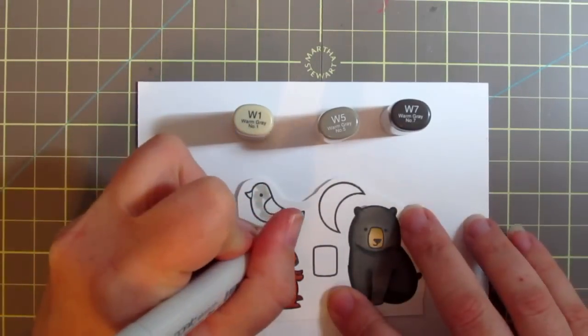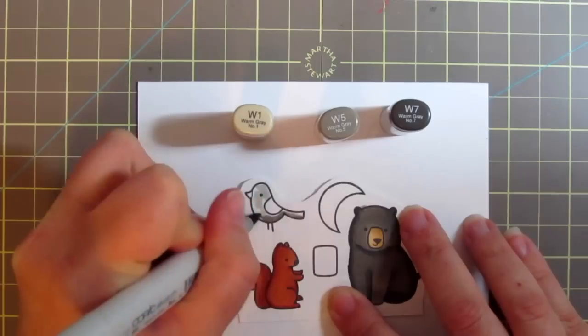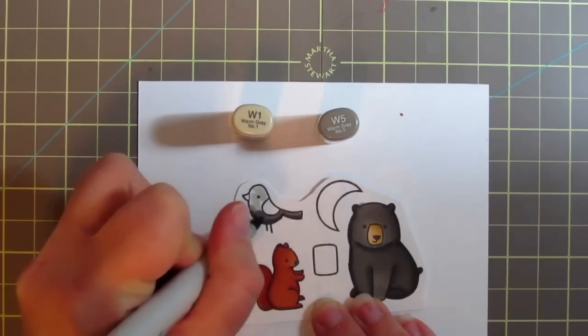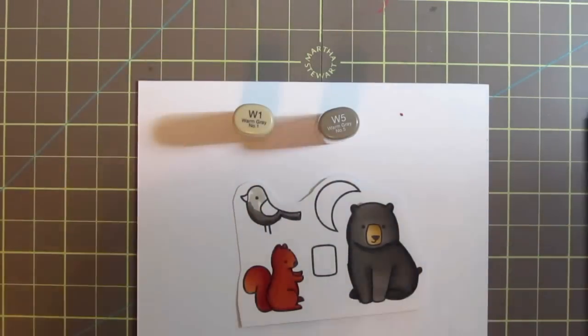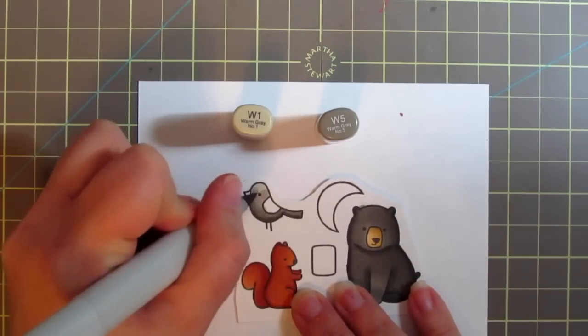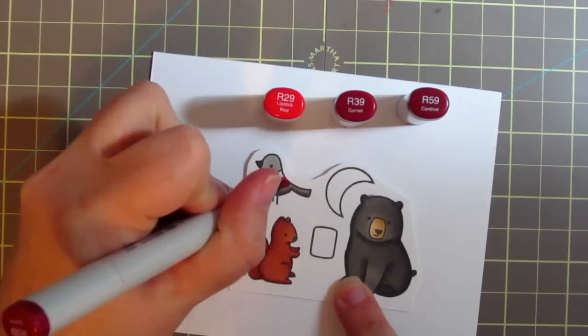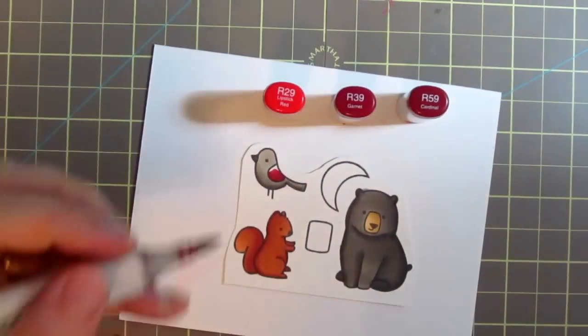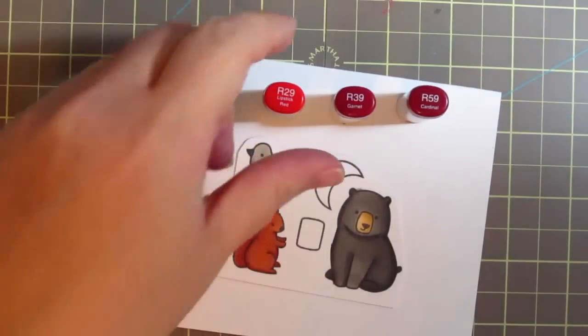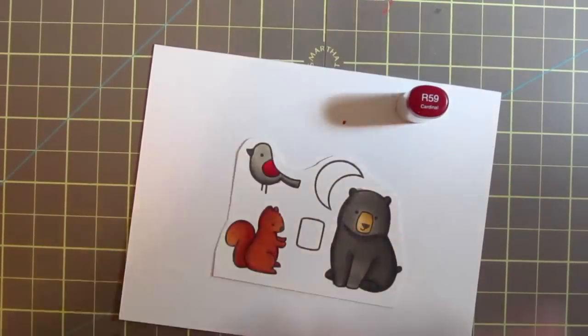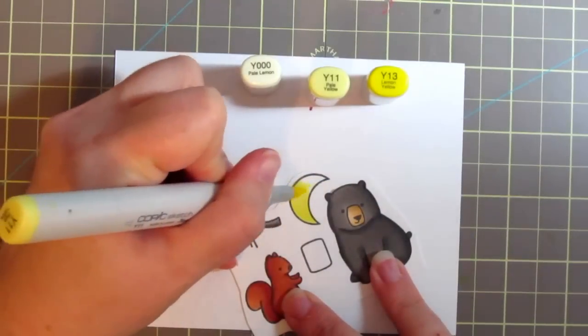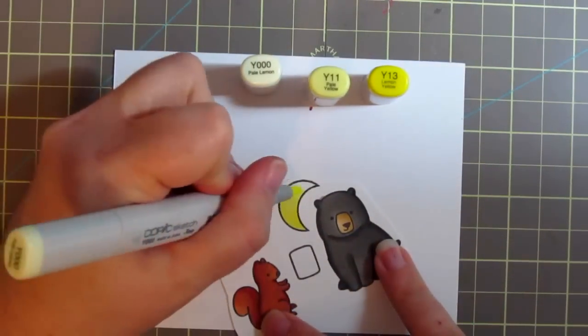For my bird, I did color him with W1, W5, and W7, but I ended up deciding at the end that he was a little too plain. I situated him on the card next to the bear and I didn't like the two gray critters being next to each other. It's just too bland, so I recolored him later with some aquas—BG13, 15, and 17. I wanted a really pale moon, so I used Y000, Y11, and Y13.